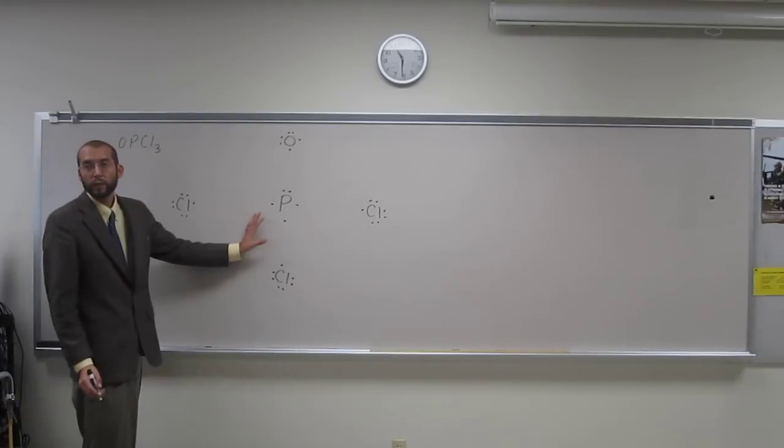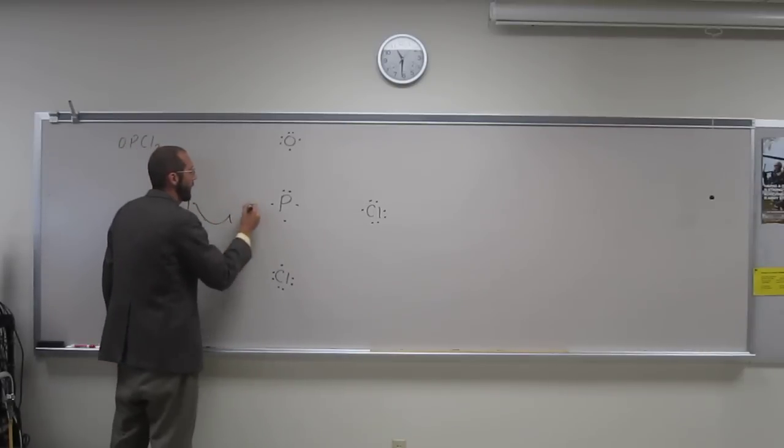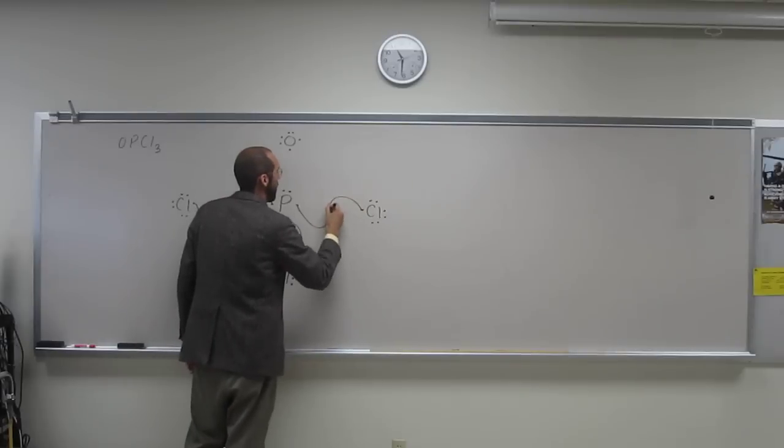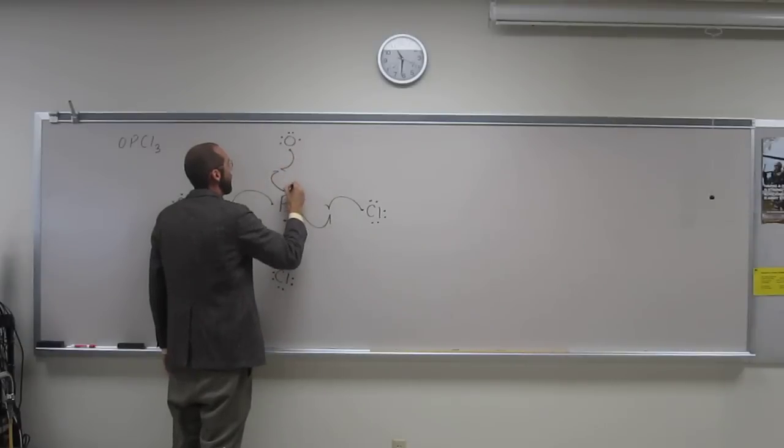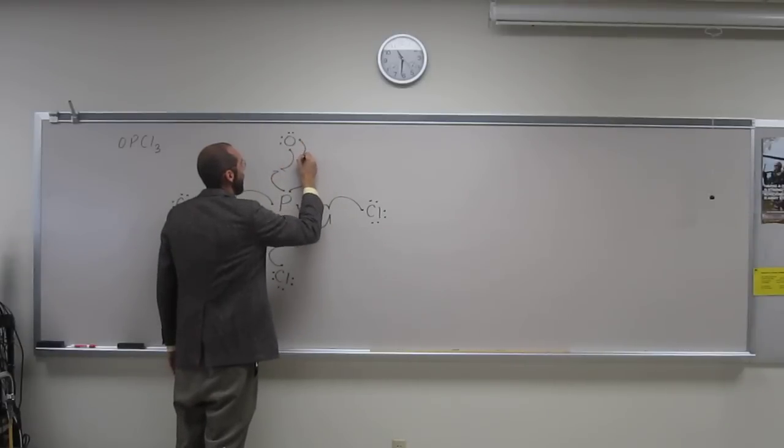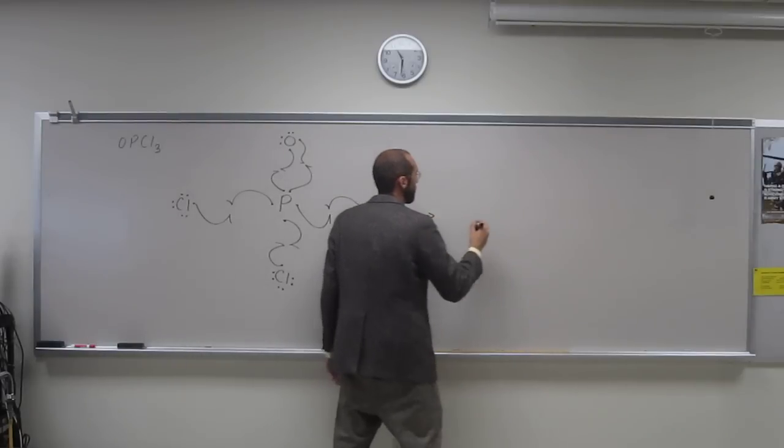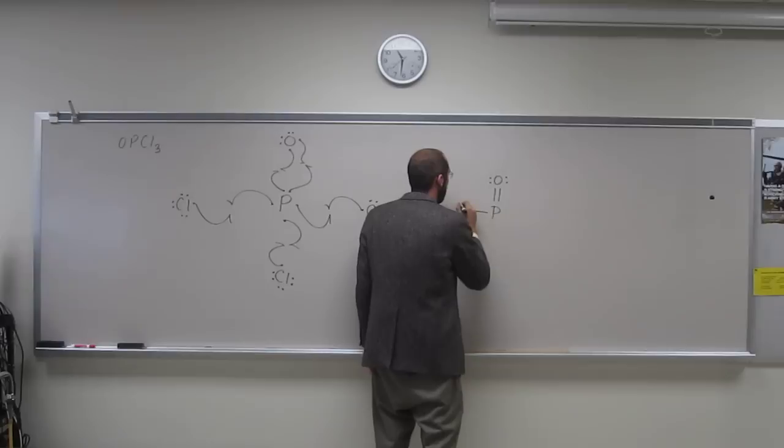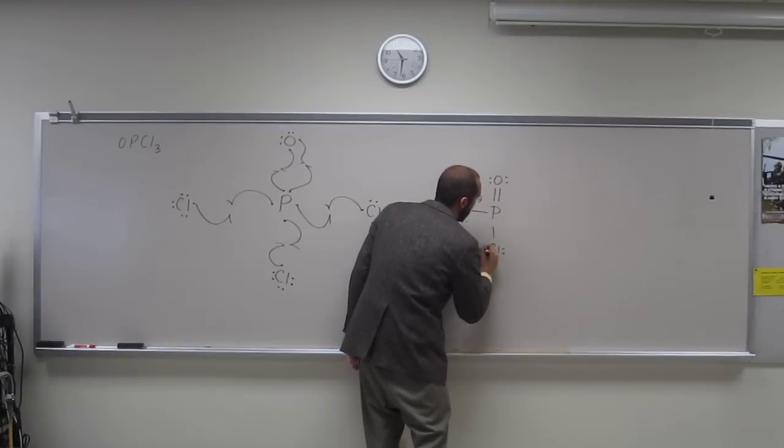So again, phosphorus is going to expand its valence in this case. Normally you would only think of it to be making three bonds because that would fill up its octet. Okay, so there. And then it's going to use these electrons. And this is the Lewis structure.